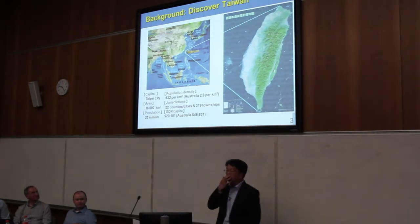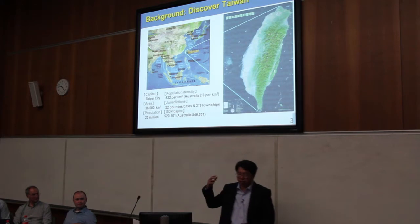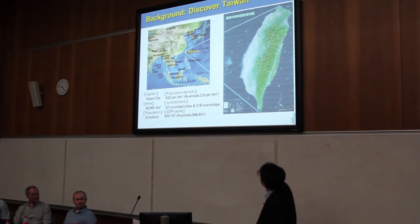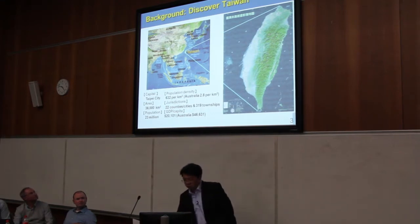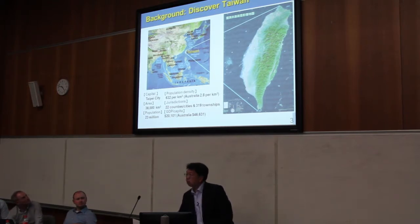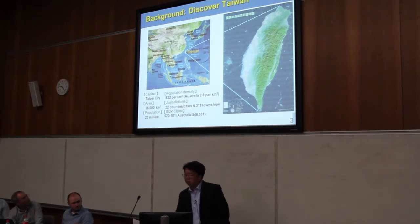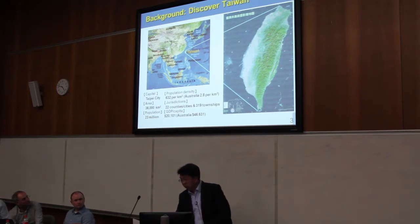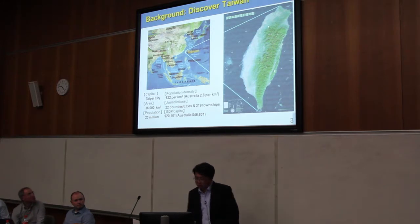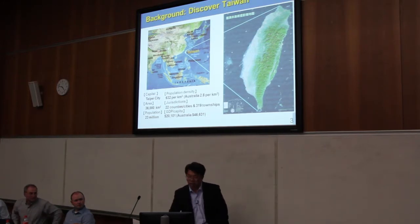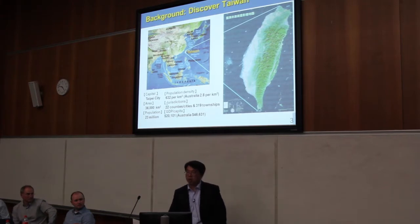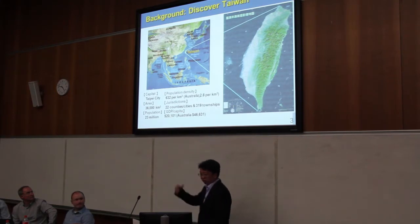Before we talk about housing reconstruction, you may want some background information regarding Taiwan. Taiwan is a very small island with 23 million people. Basically 97% of the people are staying in the west coast of the island — here is Taipei city. We have a very high density of more than 300 people per square kilometer, compared to Australia. It's a lot of difference.